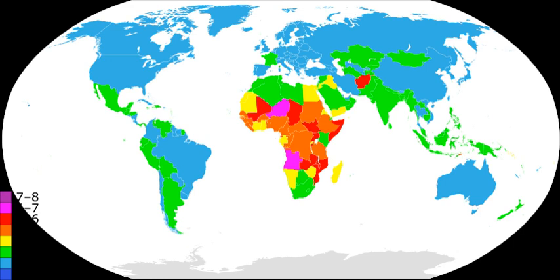Martin Luther concluded: '...God makes children. He is also going to feed them.' Jean Bodin, a French jurist and political philosopher, argued that larger populations meant more production and more exports, increasing the wealth of a country.